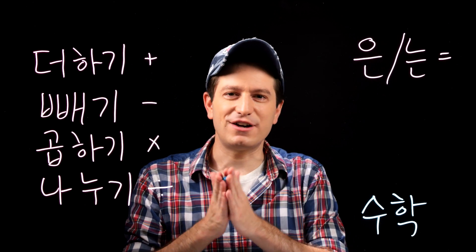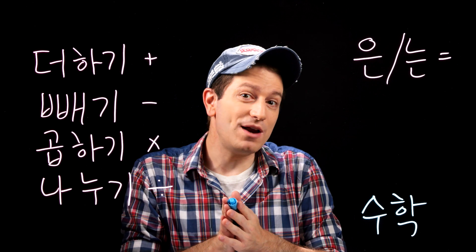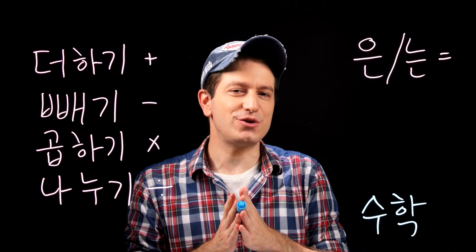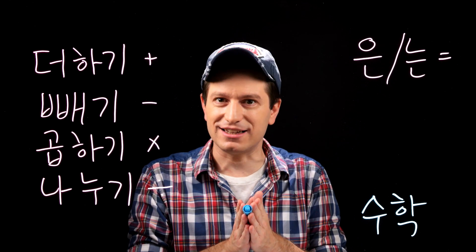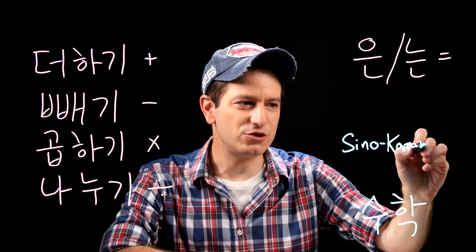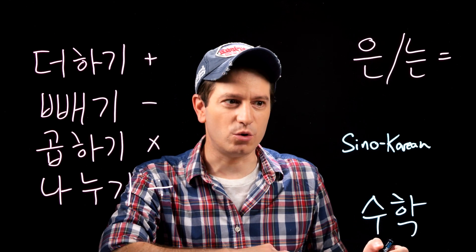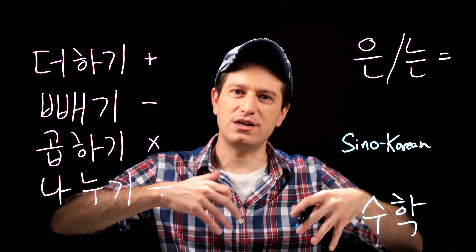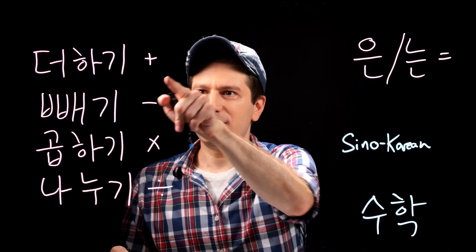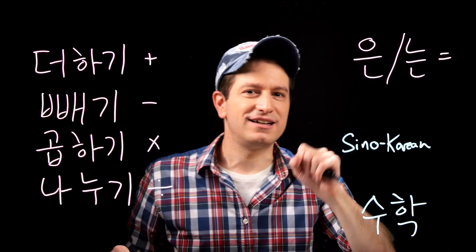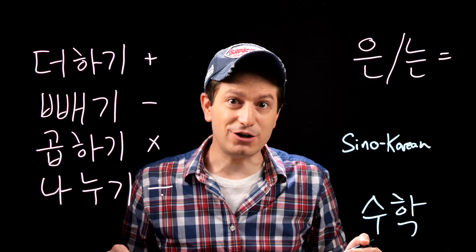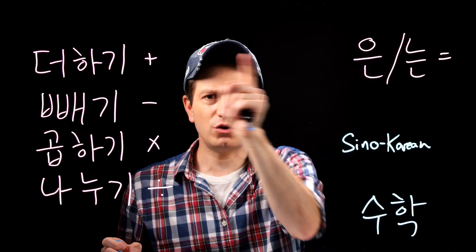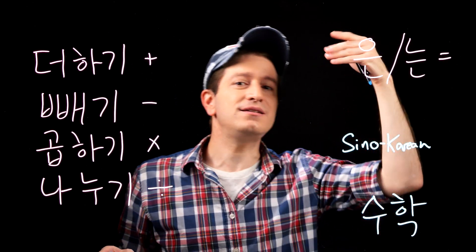Let's start with something very, very basic: one plus one equals two. The way you do this in Korean is surprisingly simple and just like how you would in English. Note that when you're doing math, you're going to be using only Sino-Korean numbers. So one plus one — let's start with 일. 일 더하기 일. Then in order to say equals, all you need is the topic marker. So you would say 일 더하기 일은 이.